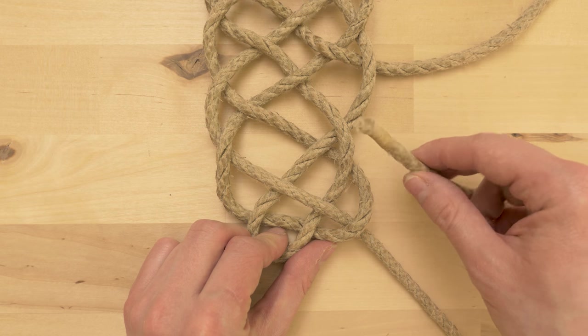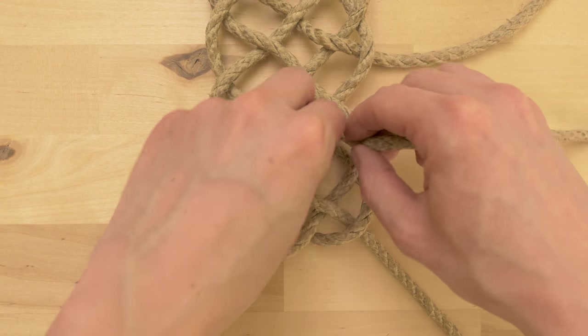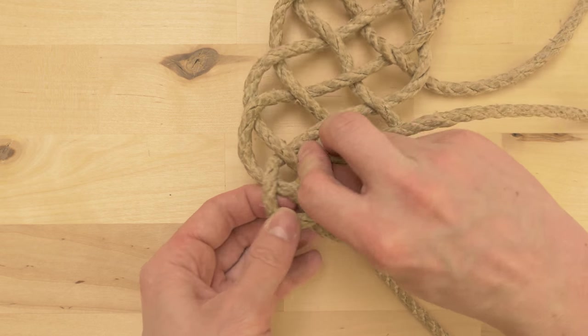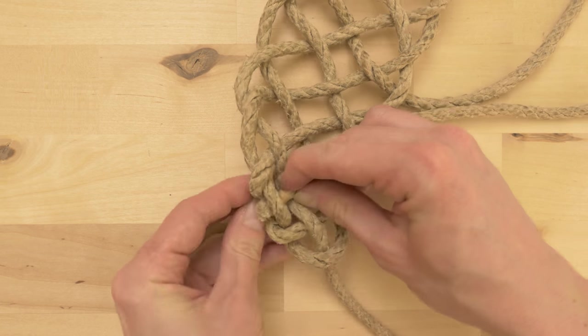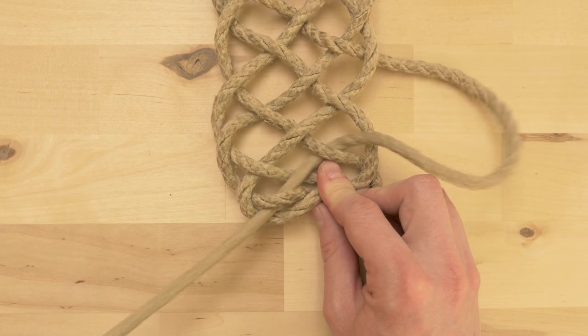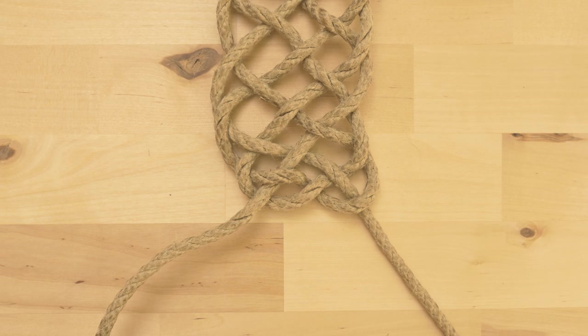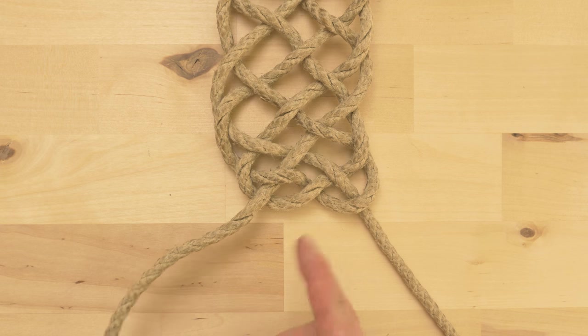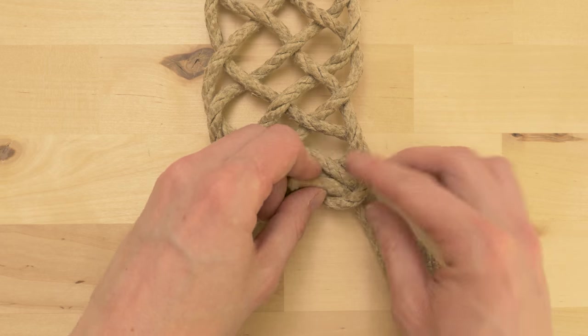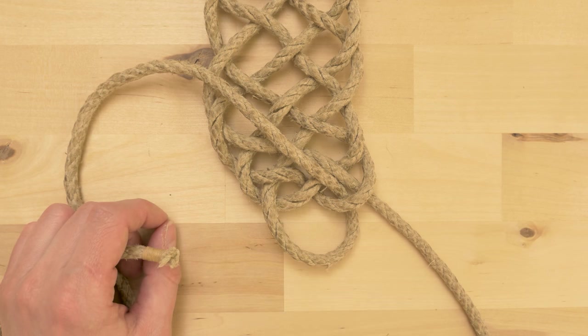With your right end, again the working end, start by going over, then under, over, under, and finally over on the left side. The last step in this mat is to place your end next to the other end, and this creates your last bite.